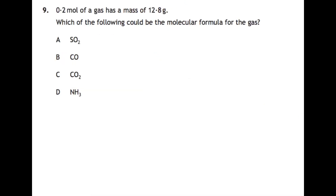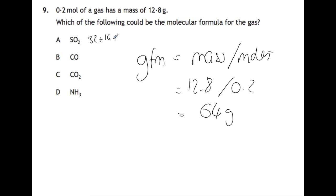Question nine: 0.2 moles of a gas has a mass of 12.8 grams. Which of the following could be the molecular formula for the gas? Here we're using your moles mass GFM triangle in a slightly different way. We're going to have gram formula mass equals mass divided by moles. You have mass as 12.8 grams, and you know how many moles that is, so it's 64 grams as the gram formula mass. For SO2, you have 32 plus 16 plus 16, which equals 64. So that should be your answer. If you check the others, you have 12 plus 16, so that's 28. You have 12 plus 16 plus 16 equals 44. You have 14 plus 1 plus 1 plus 1, which equals 17. So your answer is A, SO2.